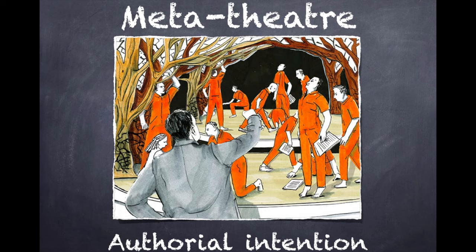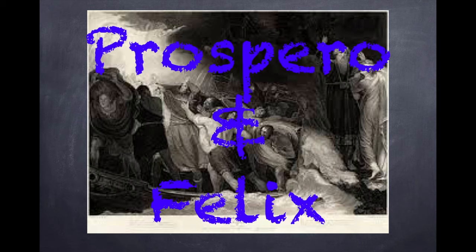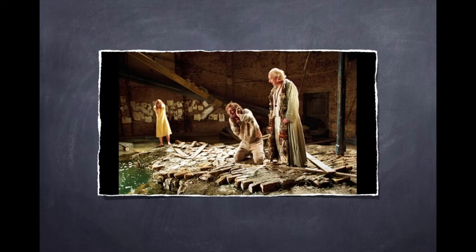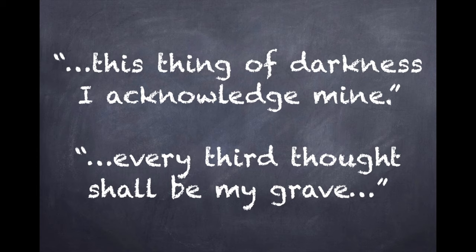And now to the characters of Prospero and Felix. When we study The Tempest, we track Prospero's transformation throughout the play: 'Hast thou, which art but air, a touch, a feeling of their afflictions? And shall not myself, one of their kind, be kindlier moved than thou art?' Prospero also acknowledges his role in the conflict with Caliban — 'This thing of darkness I acknowledge mine' — and the flawed nature of humanity: 'Every third thought shall be my grave.'